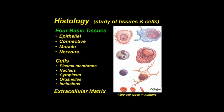As a rule, humans have four basic tissues: epithelial, connective, muscle, and nervous tissue. Each of these consists of cells and an extracellular matrix. Cells are a mass of protoplasm surrounded by a plasma membrane. In the protoplasm is the nucleus, with its DNA,